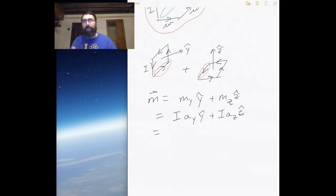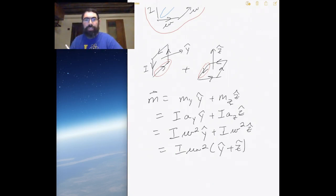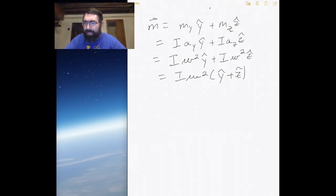I made these be squares, so the area then is just the length W squared, and that's true for both loops. So we can factor out the I W squared and we're left with this direction pointing with the component in the y direction and a component in the z direction.